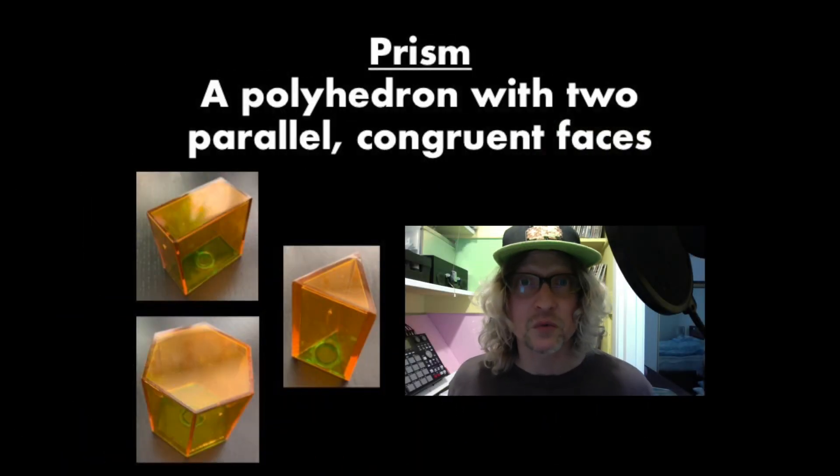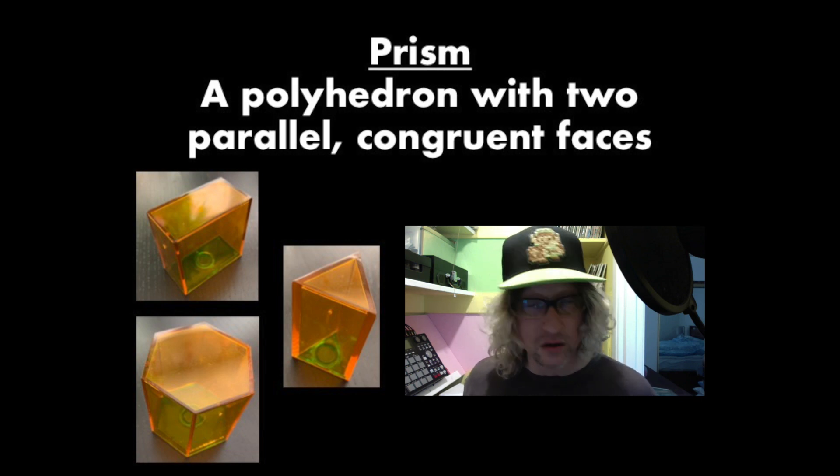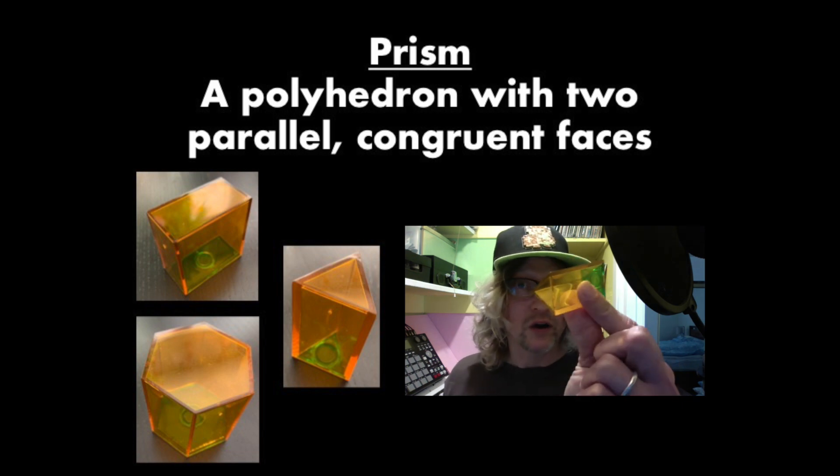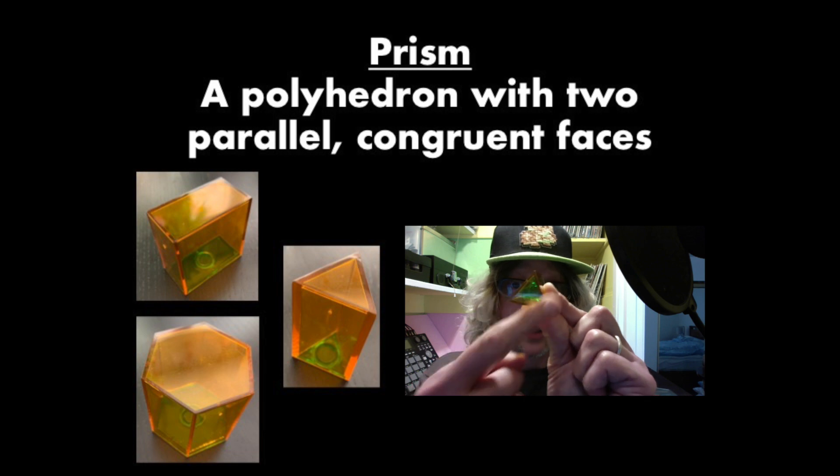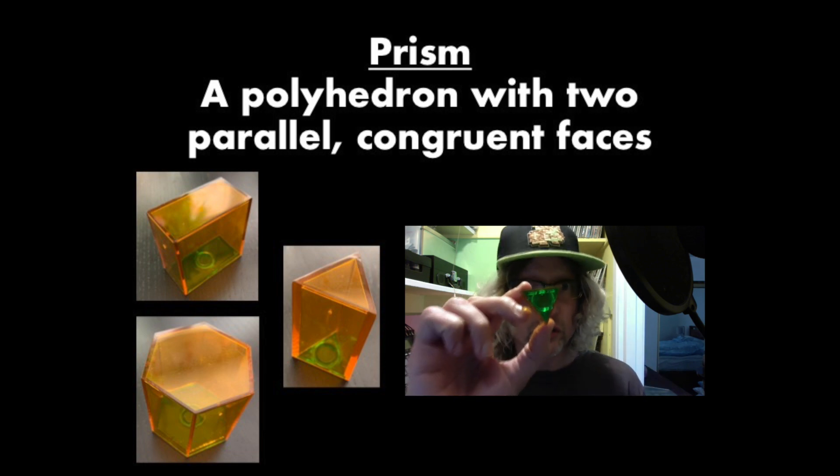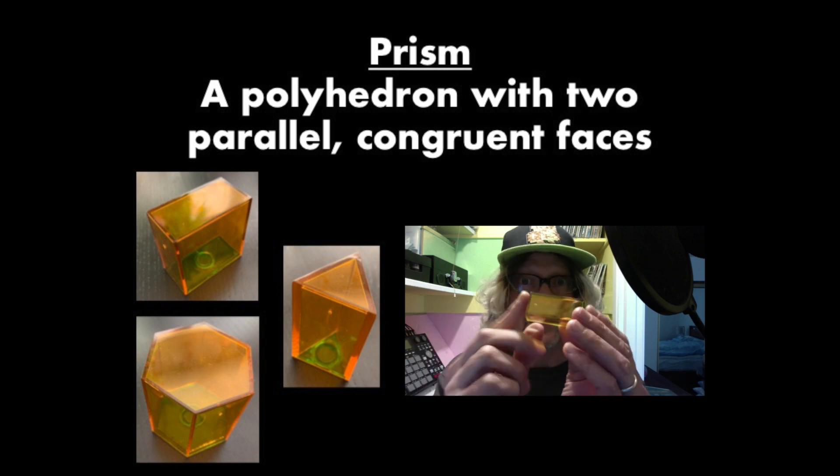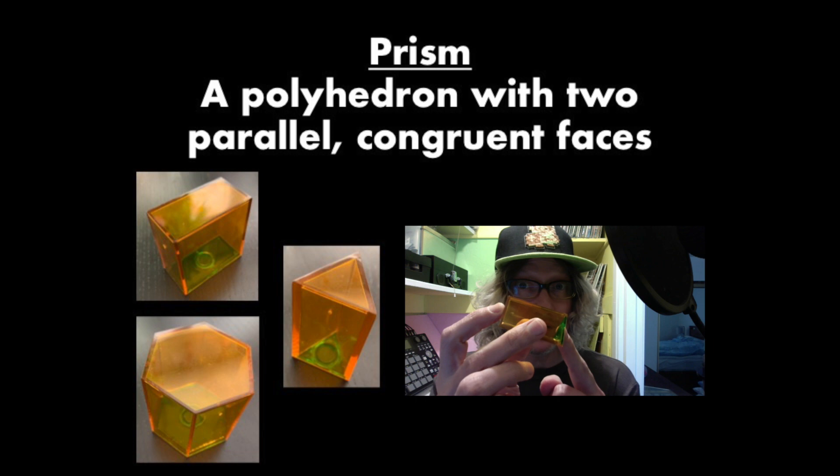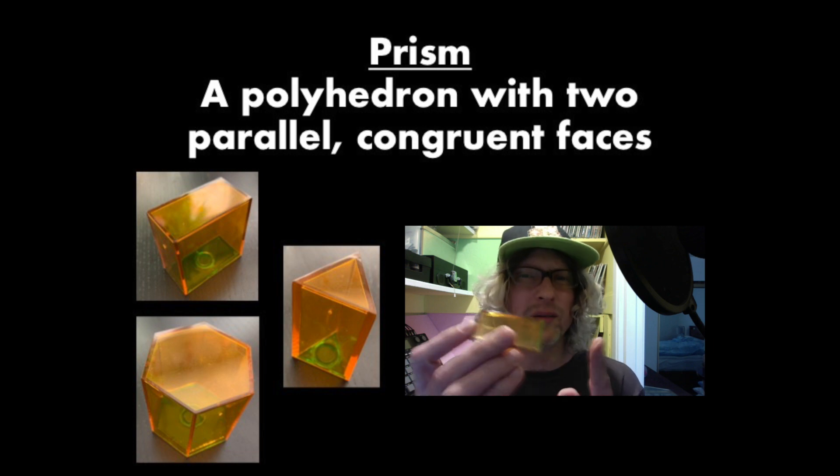Our next word is prism. And we're defining a prism as a polyhedron with two parallel congruent faces. So let's take a look at this prism right here. What makes this prism a prism? If you look here, it's got a triangular face. It has an opposite congruent triangular face. These two faces are parallel. These two parallel congruent faces, we call them the bases.